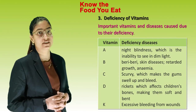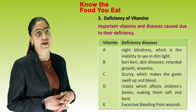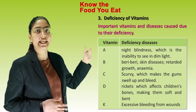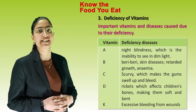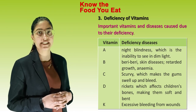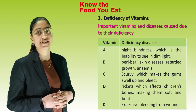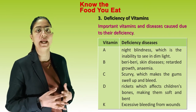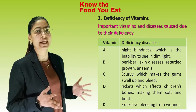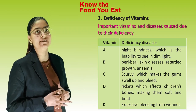Deficiency of vitamins and diseases caused: Vitamin A deficiency causes night blindness — the inability to see in dim light. Vitamin B deficiency causes beriberi, skin diseases, retarded growth and anemia. Vitamin C deficiency causes scurvy, which makes the gums swell up and bleed. Vitamin D deficiency causes rickets, which affects children's bones, making them soft and bent. Vitamin K deficiency causes excessive bleeding.